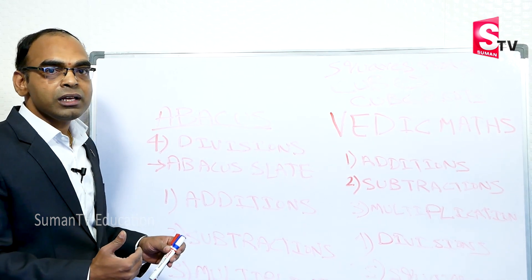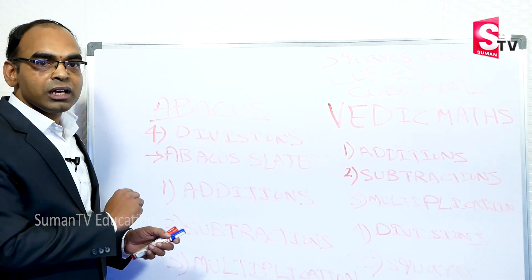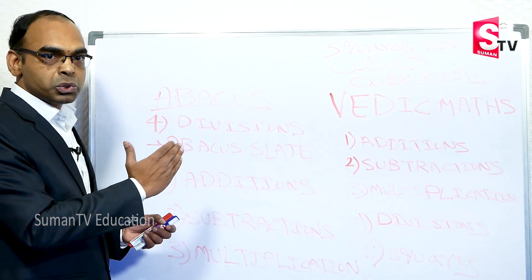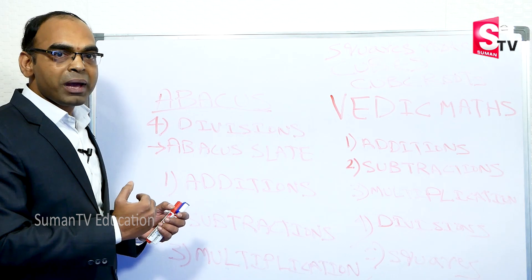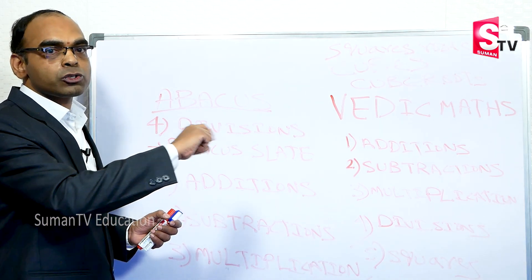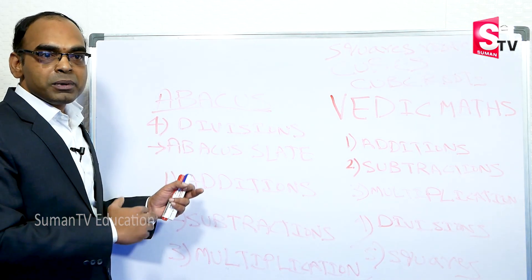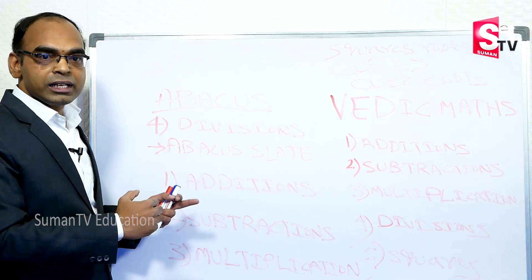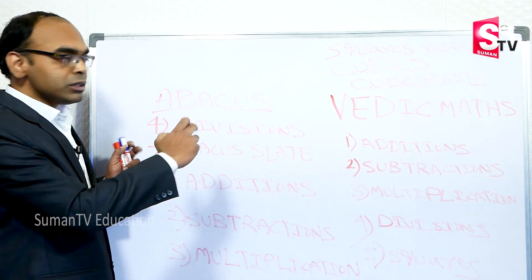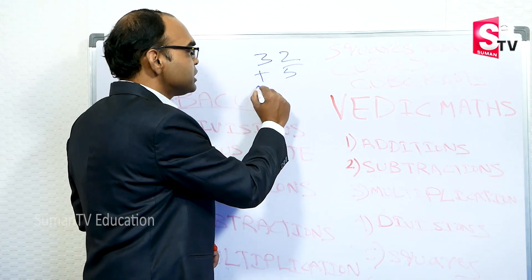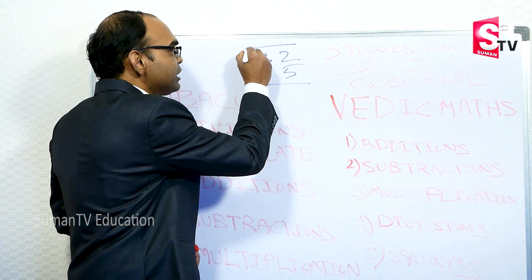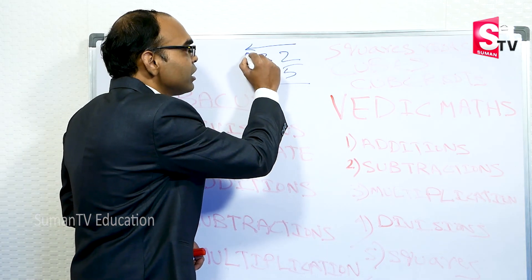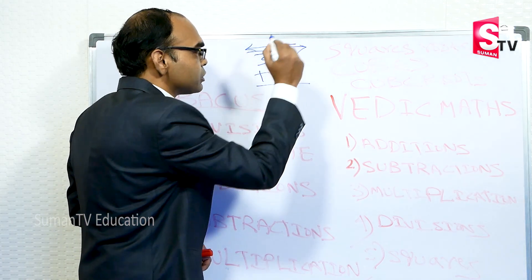32 plus 5. In general math, we will calculate from left to right. But in Vedic Math, we will calculate from right to left. Suppose 32 plus 5 — before adding, we will start calculating from the right side. In our general math we calculate left to right, but in Vedic Math we calculate from right to left.